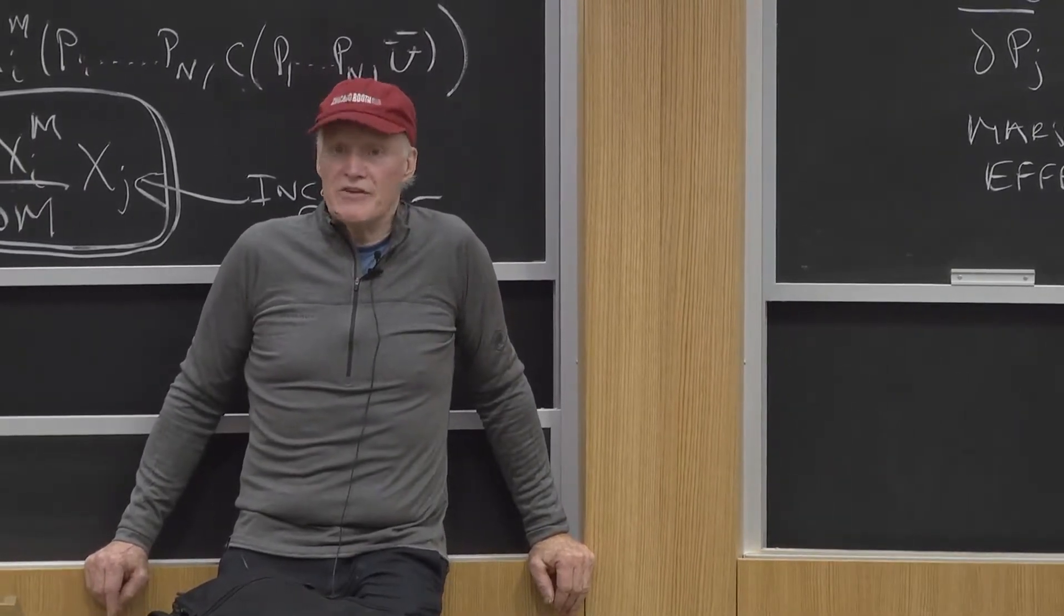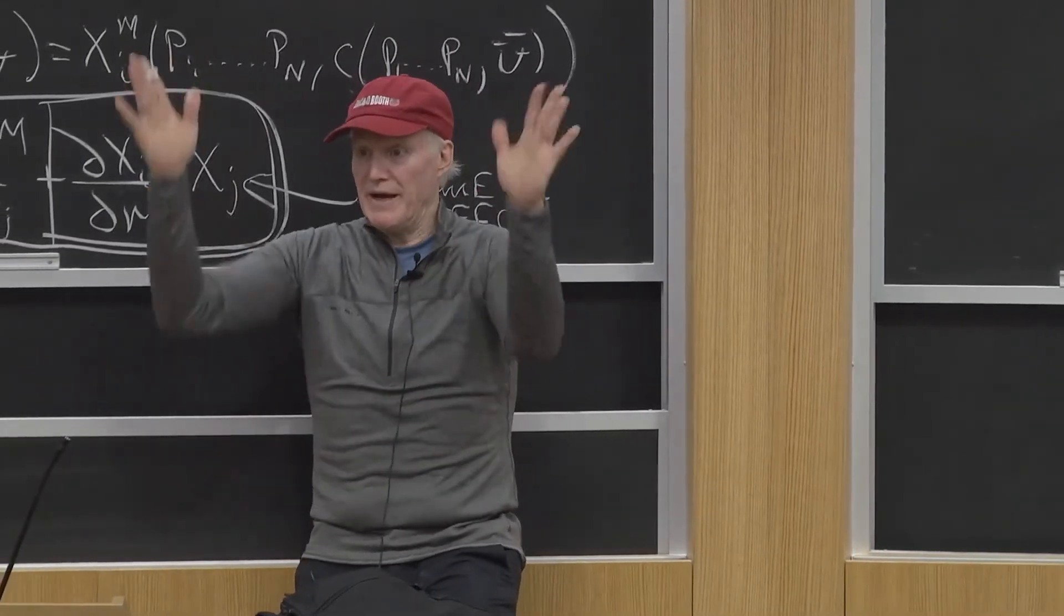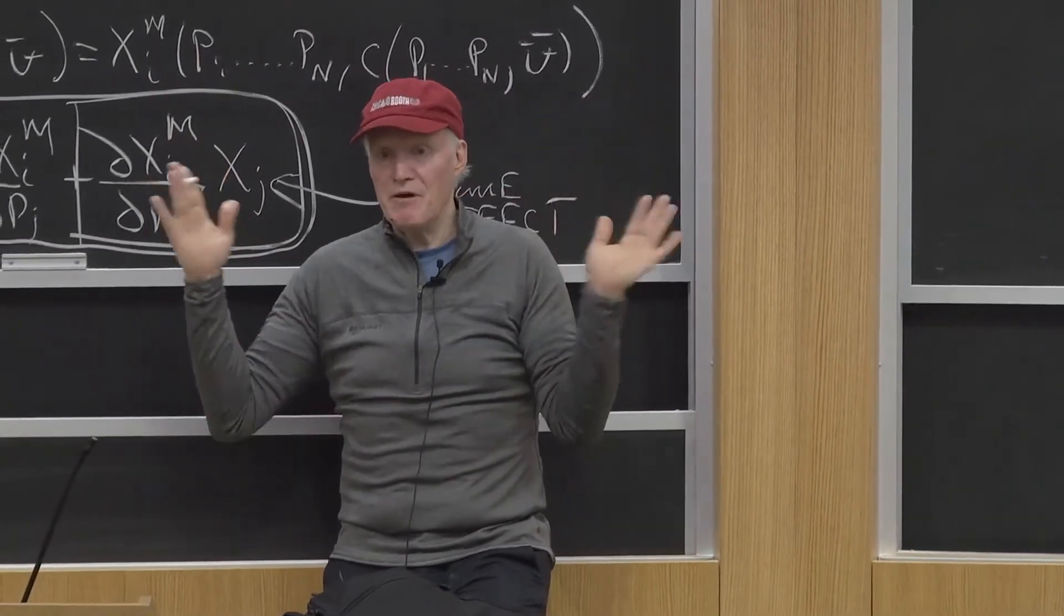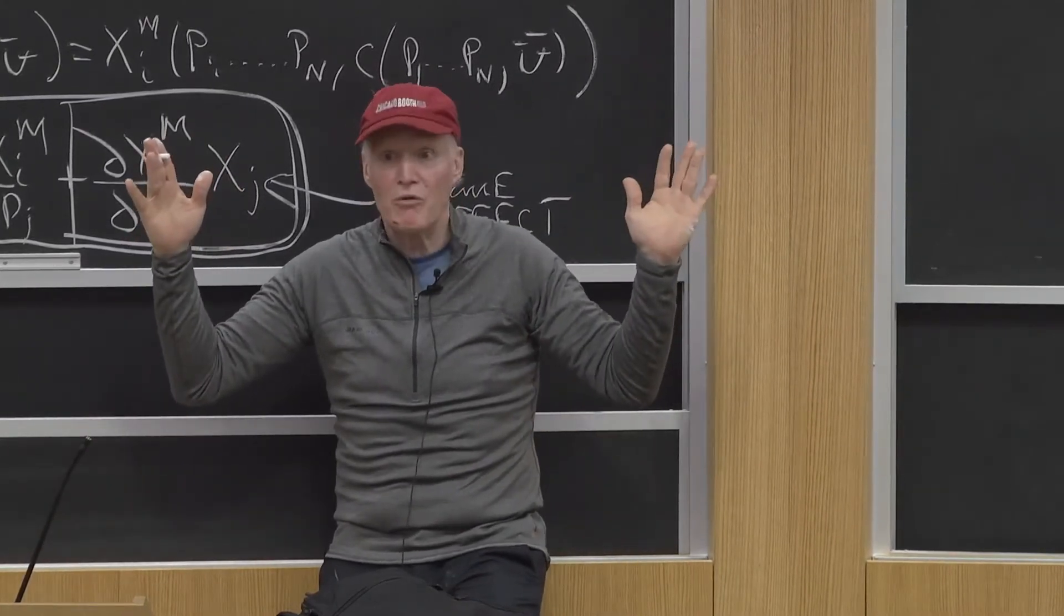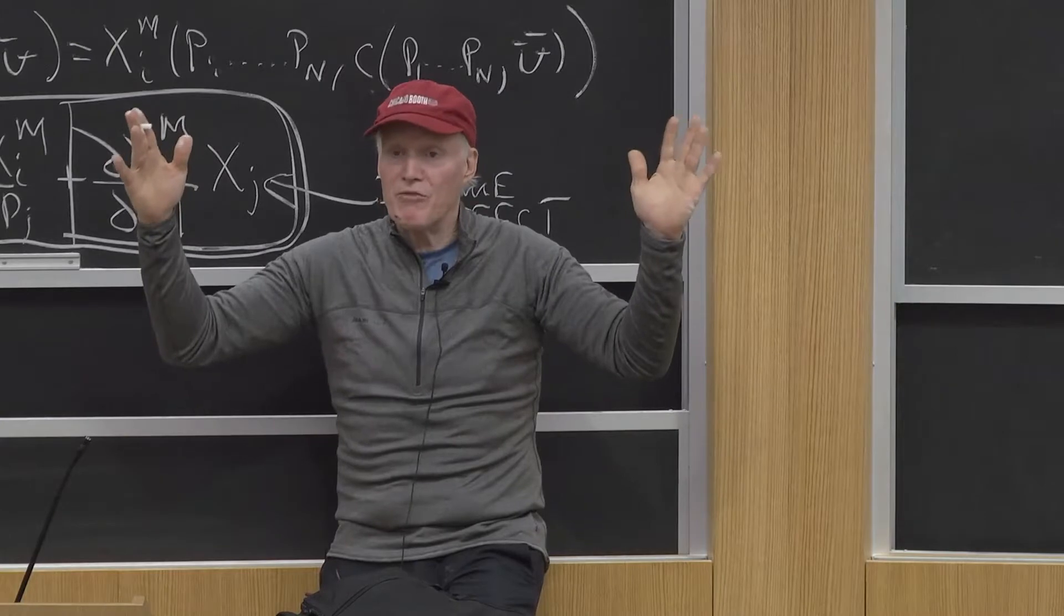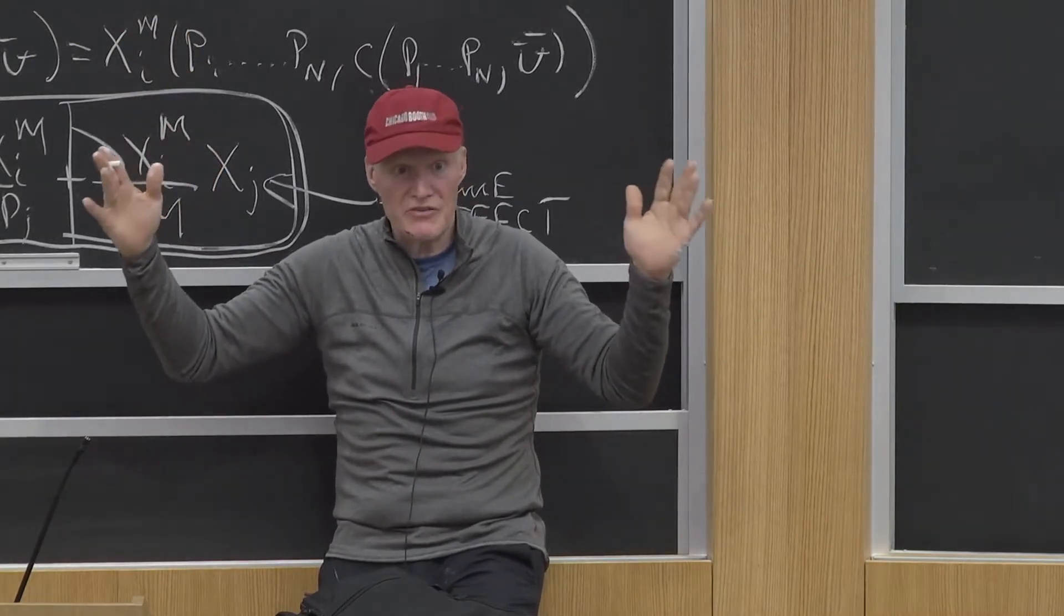The way to think about it is this. I'm buying 10 units of good J. The price of good J goes up by a dollar. I'm effectively, at that point, $10 poorer than I was before. To buy what I bought before would cost $10 more than it used to. I got a dollar extra on each of the 10 units.